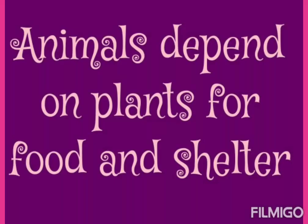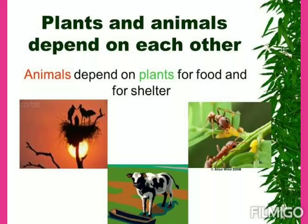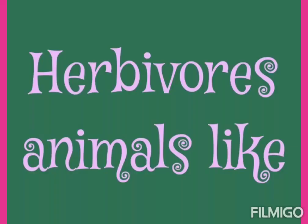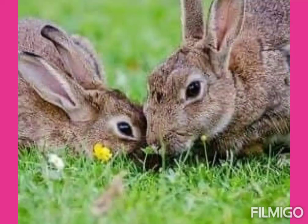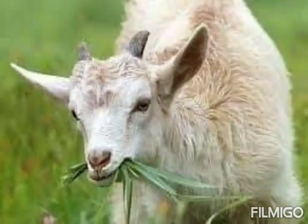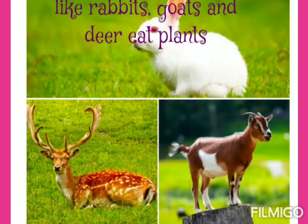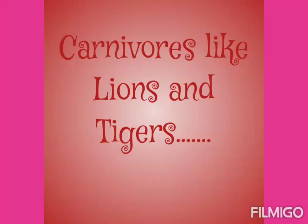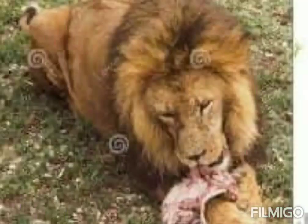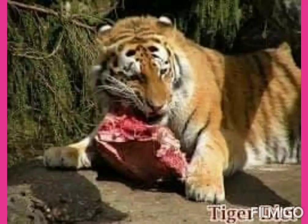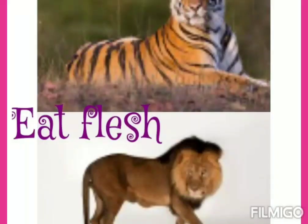Animals depend on plants for food and shelter. Herbivores animals like rabbits, goat, and deer eat plants. Carnivores like lion and tiger eat flesh.